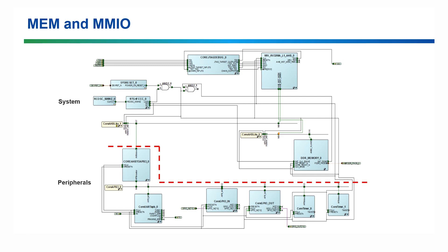The MMIO is used to connect peripherals. As you can see, if you follow the blue line, it is connected to Core AHB to APB3, which is connected to Core APB3 for the peripherals. If you follow the orange line, you can see the MEM pin connecting to the Core AHB Lite and the DDR memory.